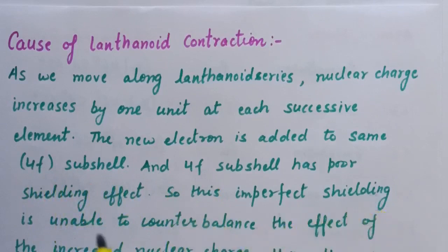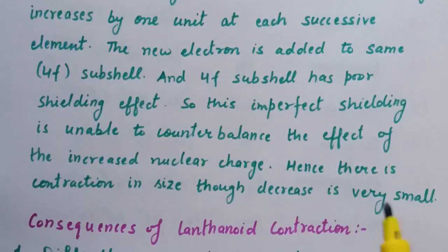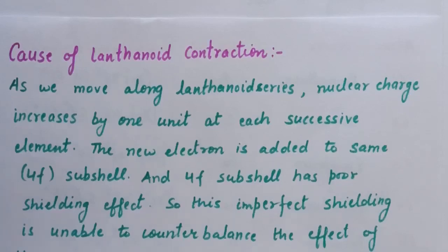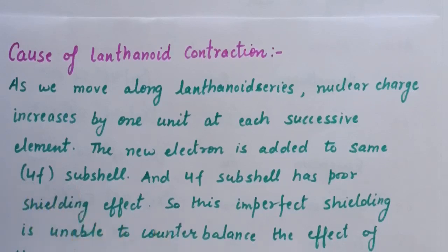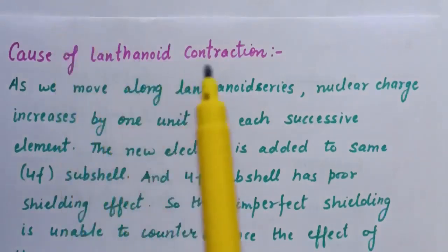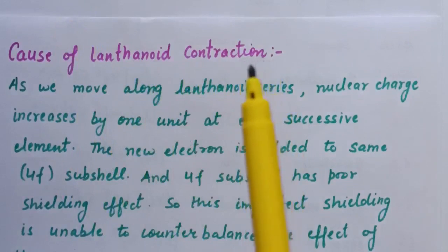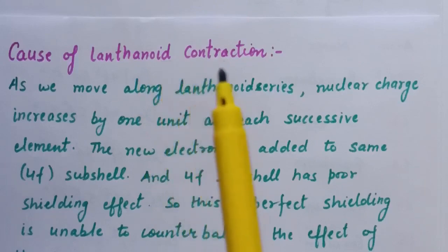This imperfect shielding is unable to counterbalance the effect of increased nuclear charge, and there is a contraction in size, though the decrease is very small. When we move from atomic number 57 to 71 in lanthanoids, the new electron is added to the 4f subshell, which has poor shielding effect. Due to the poor shielding effect of the 4f orbital, there is a gradual decrease in atomic and ionic radii of lanthanoids, and that is known as lanthanoid contraction.